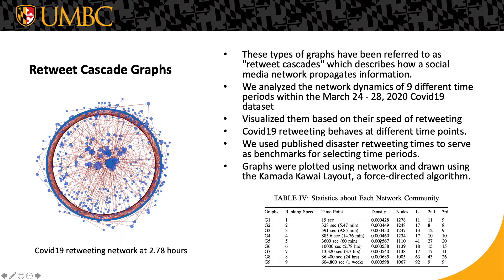We also visualized the retweet cascade graphs, which show how social media networks propagate information. We analyzed nine different periods of time shown in Table 4. The graph on the left shows what the COVID retweeting network looked like at 2.7 hours, which was the median amount of time it took to retweet COVID-19 messages. The blue indicates the node, which is the account, and the red indicates the edges or connections between accounts. We visualized them based on different speeds of retweeting, selecting time points based on published benchmark graphs in the disaster literature.